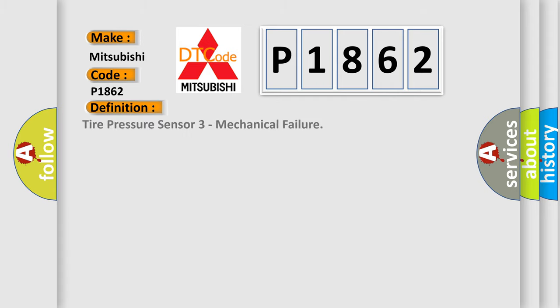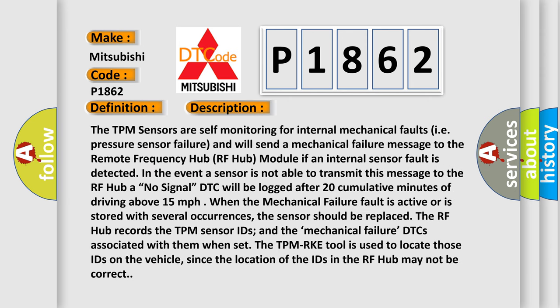The basic definition is: Tire Pressure Sensor 3 Mechanical Failure. The TPM sensors are self-monitoring for internal mechanical faults, i.e., pressure sensor failure, and will send a mechanical failure message to the remote frequency hub (RF hub) module. If an internal sensor fault is detected, or in the event a sensor is not able to transmit this message to the RF hub at no signal, the DTC will be logged after 20 cumulative minutes of driving above 15 miles per hour. When the mechanical failure fault is active or is stored with several occurrences, the sensor should be replaced. The RF hub records the TPM sensor IDs and the mechanical failure DTCs associated with them when set. The TPM RKE tool is used to locate those IDs on the vehicle, since the location of the IDs in the RF hub may not be correct.